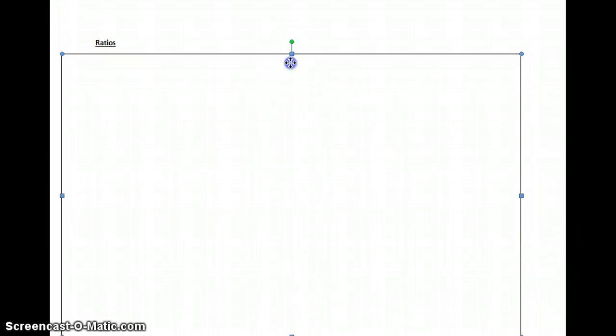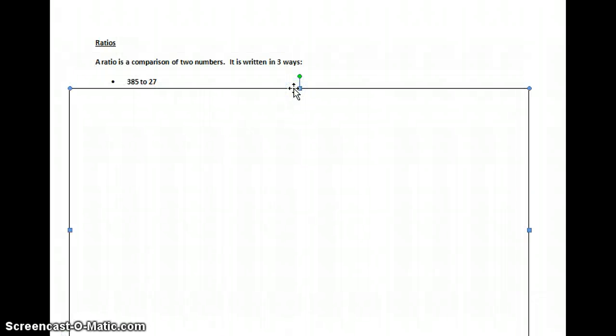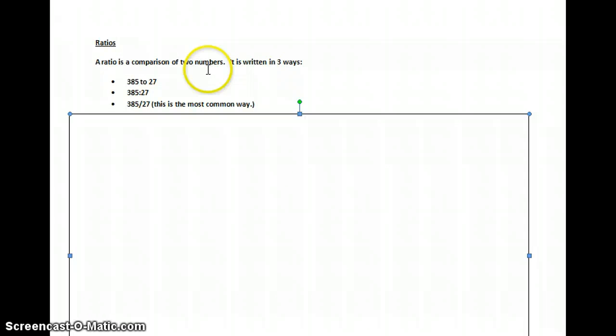First off, our smallest one is a ratio. And a ratio is quite simply just a comparison of two numbers. It's written in three different ways.